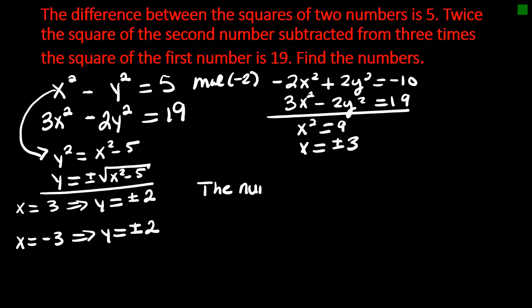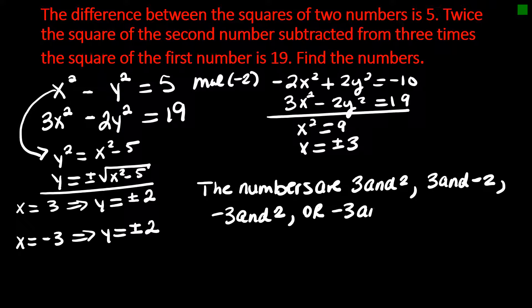The numbers are, it can be 3 and 2. You can have negative 3 and negative 2. You can have negative 3 and 2. Or you can have negative 3 and negative 2.